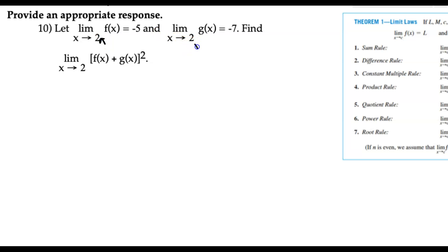So they're both approaching 2 in this case. So the limit that we're looking for says, find the limit of f of x plus g of x quantity squared. So let's think about that for a second.